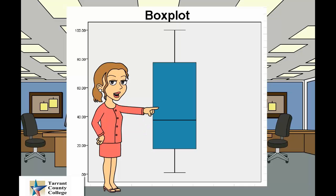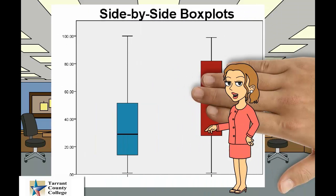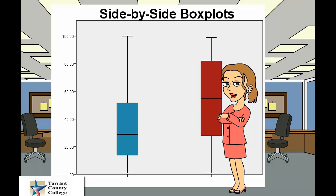A single box plot is used to better understand the distribution of a quantitative variable. It displays the median, which shows the center of the data, and quartiles, which show the dispersion of the data. Side-by-side box plots are used when it is important to understand the distributions and outliers of more than one group. A box plot demonstrates how different groups are distributed around the median.